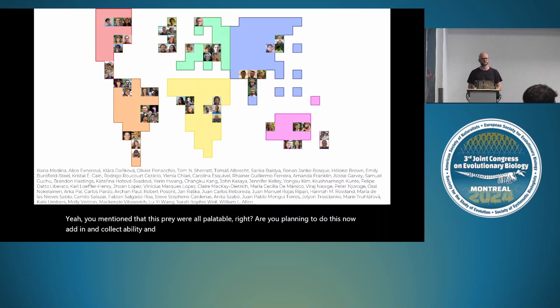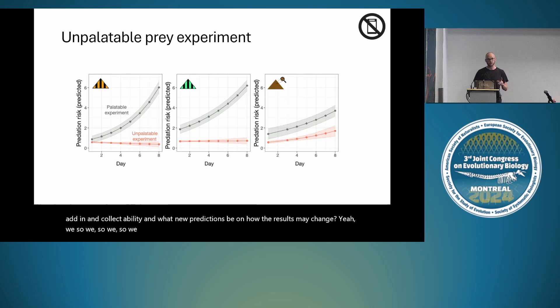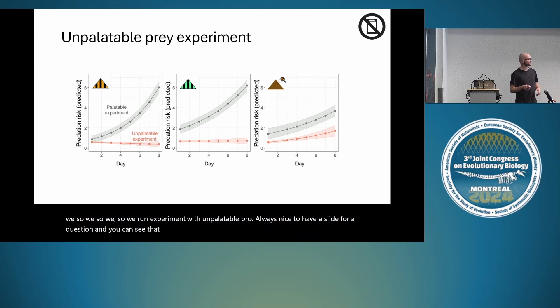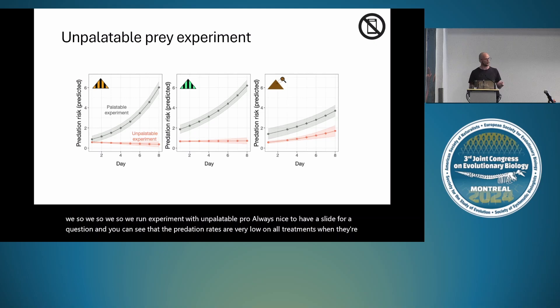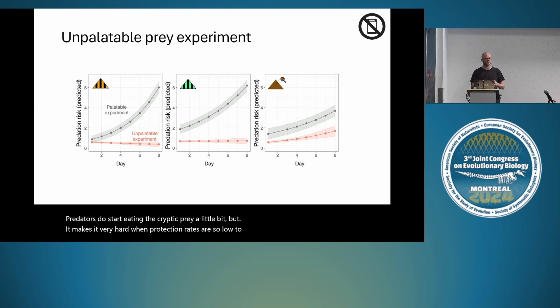On the question of whether unpalatable prey were used: we did run the experiment with unpalatable prey. Predation rates are very low on all treatments when prey are unpalatable—predators do start eating the cryptic prey a little bit—but it makes inference very difficult when predation rates are so low to detect differences between treatments.